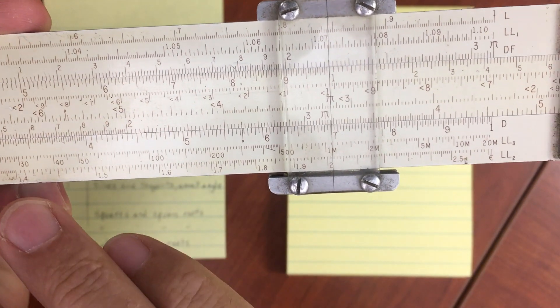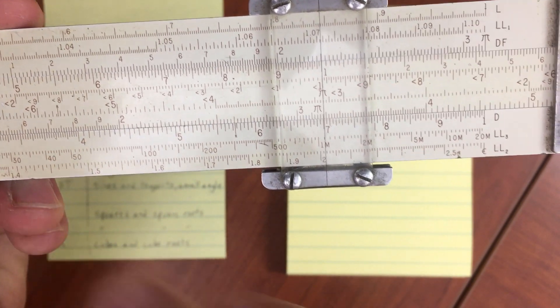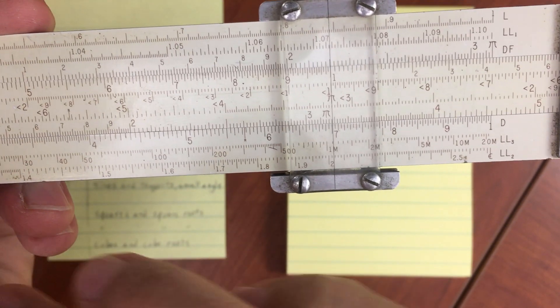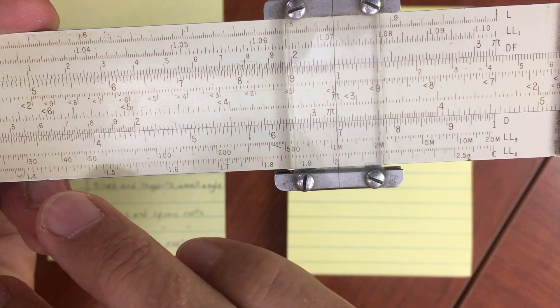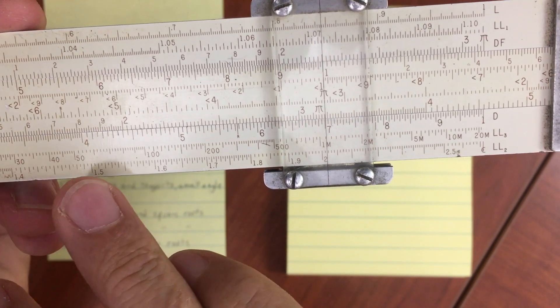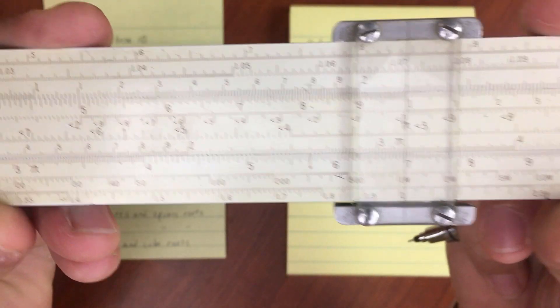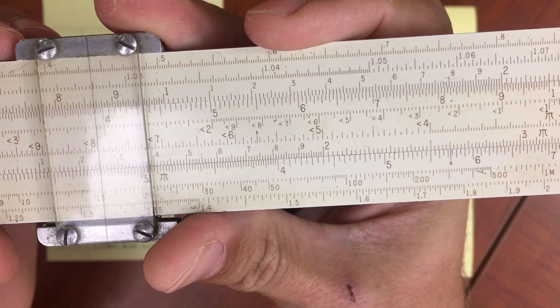So if I look down here on my C, I'm going to fold back into the C scale. So 1.25. So move my hairline over to there.